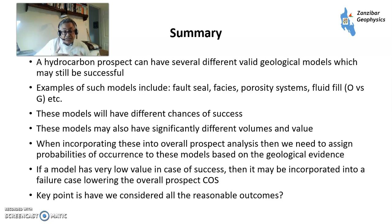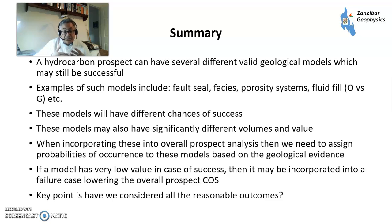So you need to know which side of the decision tree you're on and which side has value. When incorporating all of these things into an overall prospect analysis, you need to assign probabilities of occurrence to these models based on the geological evidence you have, and these change as you do more work. If you have a model — for example a fault seal model — where model A may be very small, you could perhaps count that as a failure. If it's got a very low value in case of success, you may wish to put that into the negative territory. But the key point is: have you considered all the reasonable outcomes? Decision trees really help with trying to clarify your thoughts, clarify your ideas, and explain what your ideas are to other people.